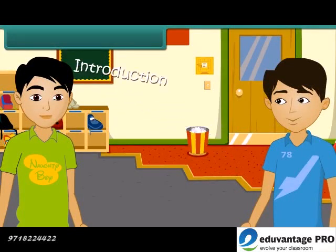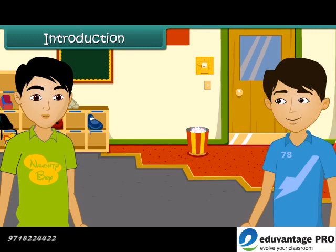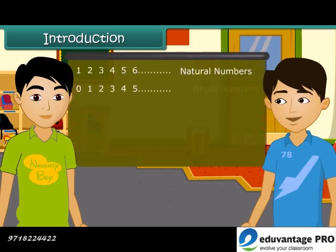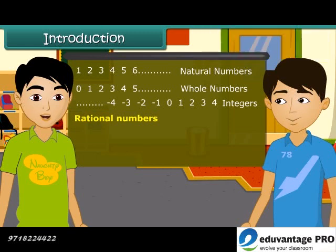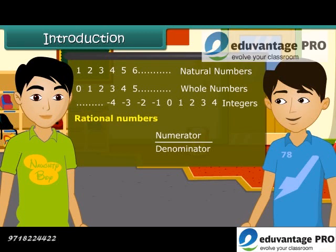What are you doing Amit? Hey Rahul, come. You know, today our maths teacher taught us a new topic: rational numbers. I know about natural numbers, whole numbers and integers, but what are rational numbers? These numbers are in the form numerator by denominator, where the numerator is either 0 or a positive integer and the denominator is a positive integer. I did not understand. Come, I will explain you.